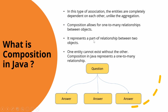Now let's move to Composition. In composition, the entities are completely dependent on each other, unlike aggregation where entities are independent. Composition allows for a one-to-many relationship between objects and represents a 'part-of' relationship between two objects. One entity cannot exist without the other.